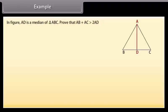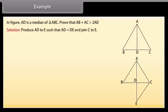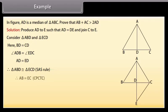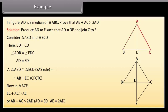Example: In the figure, AD is a median of triangle ABC. Prove that AB plus AC is greater than 2AD. Solution: Produce AD to E such that AD is equal to DE and join C to E. Consider triangle ABD and triangle ECD. Here, BD is equal to CD, angle ADB is equal to angle EDC, and AD is equal to ED. Therefore, by SAS congruence rule, triangle ABD is congruent to triangle ECD. Therefore, AB is equal to EC by CPCTC. Now, in triangle ACE, EC plus AC is greater than AE, or AB plus AC is greater than 2AD, because AD is equal to ED which implies AE is equal to 2AD.